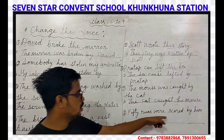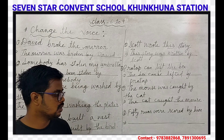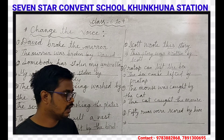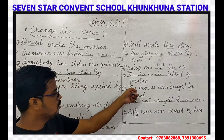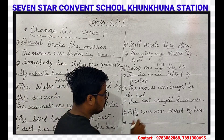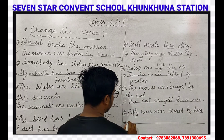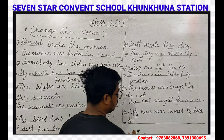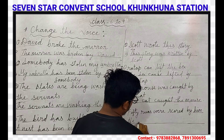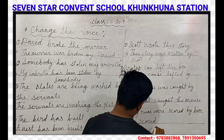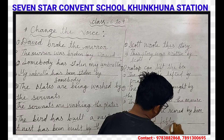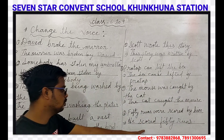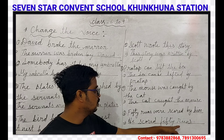Our next question is: 50 runs were scored by him. It is also simple past tense and this sentence is also in passive voice, so we have to change it into active voice — same as question 7. 'Him' will become 'he.' He scored 50 runs. It is now active voice.